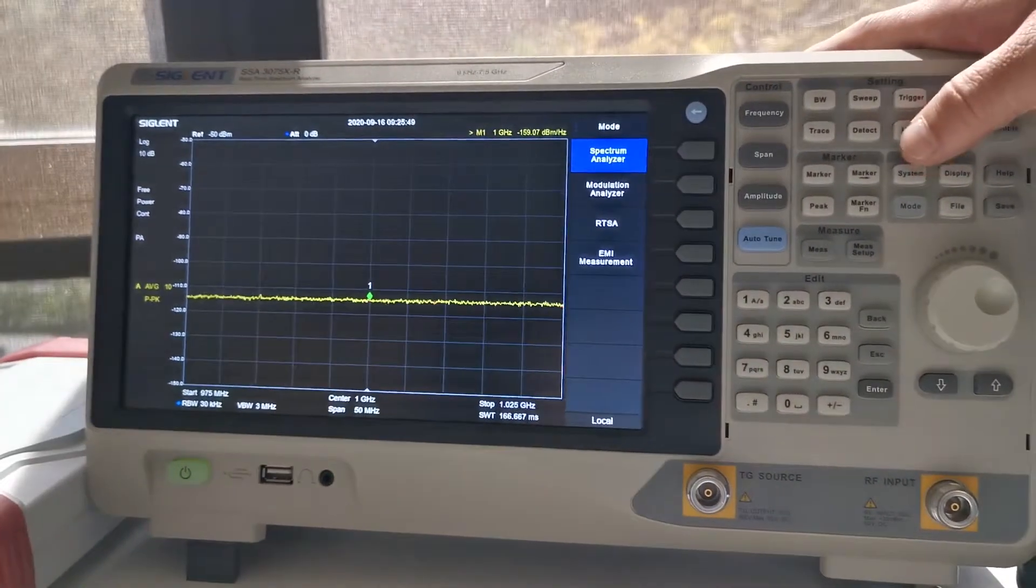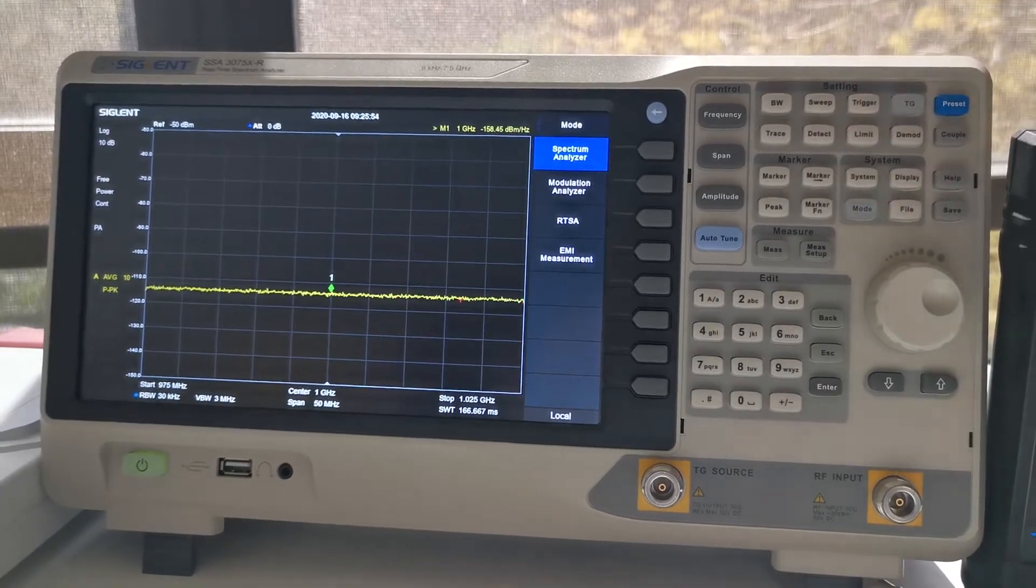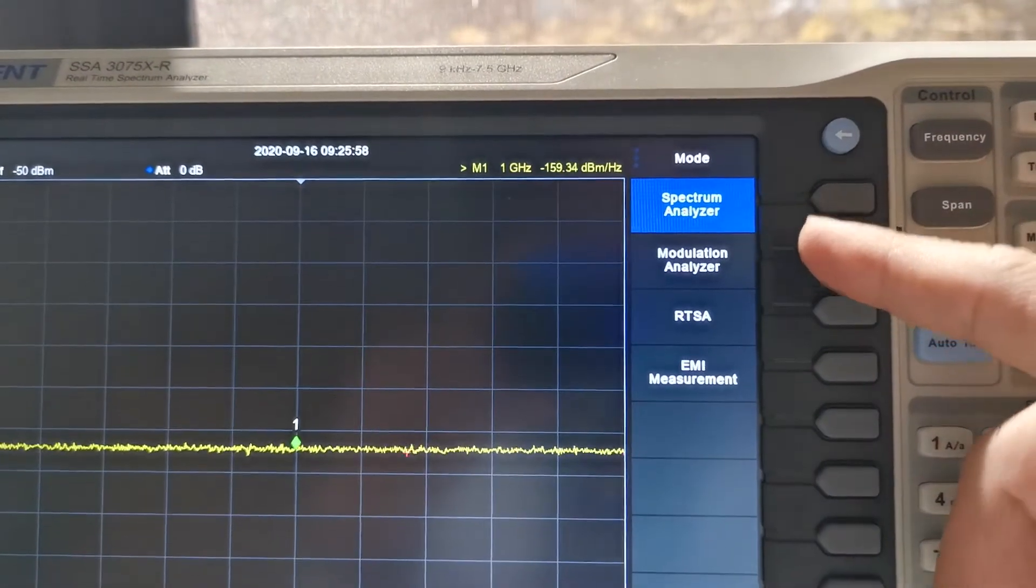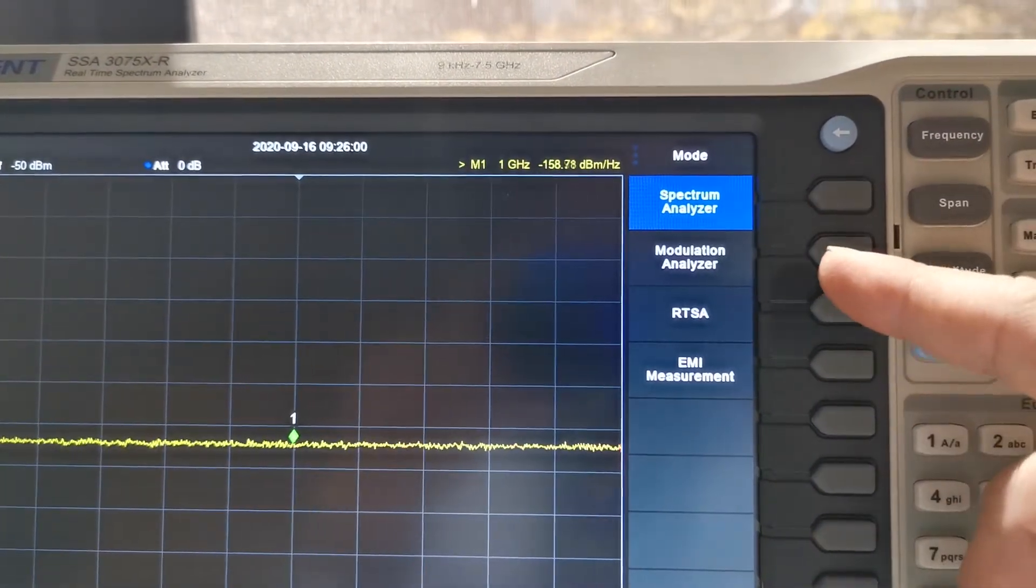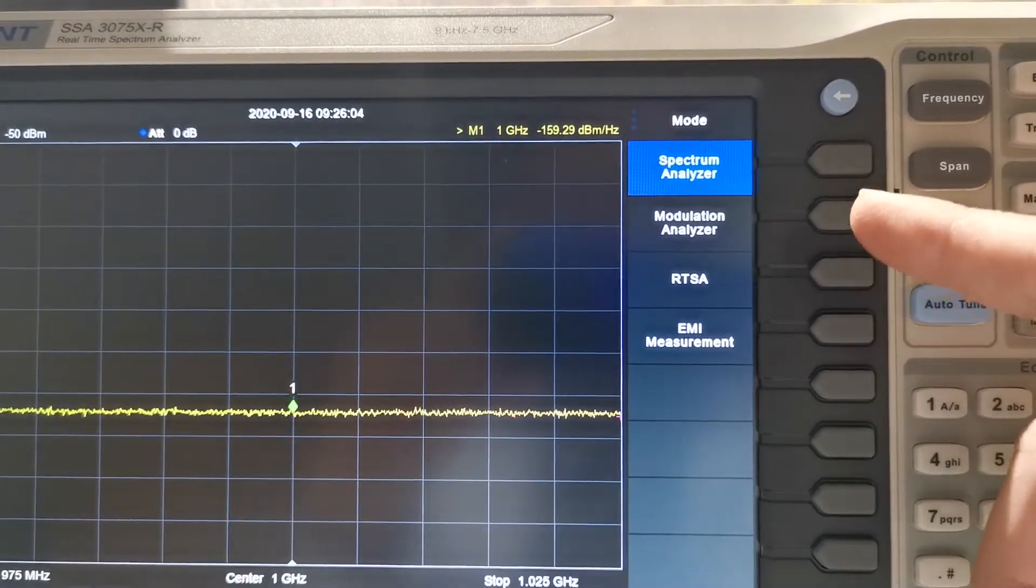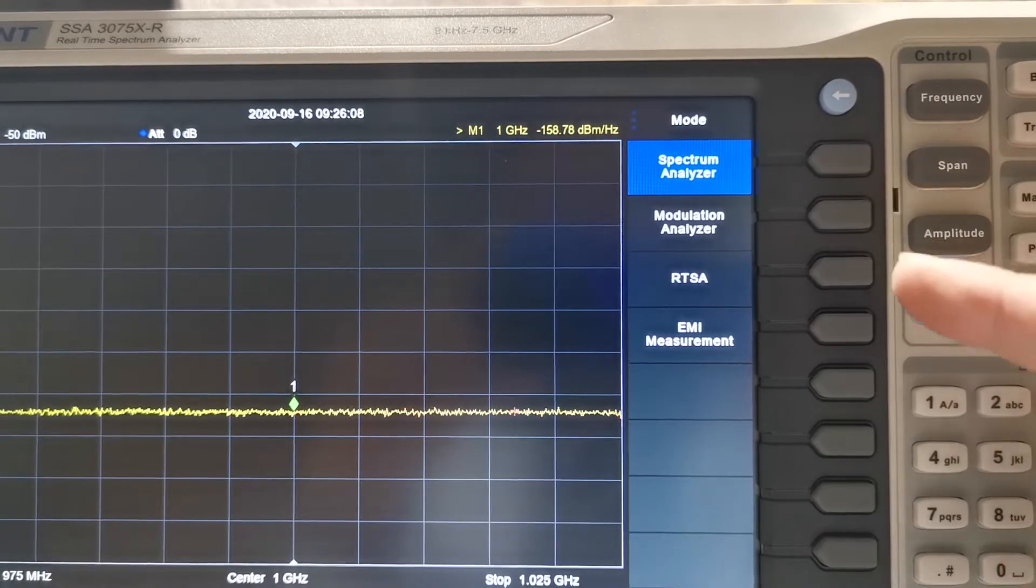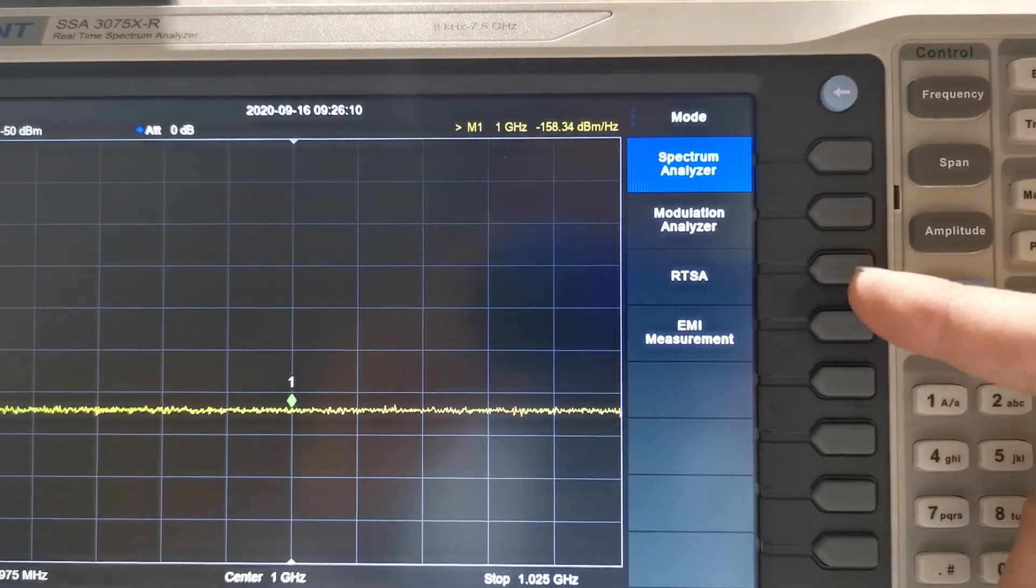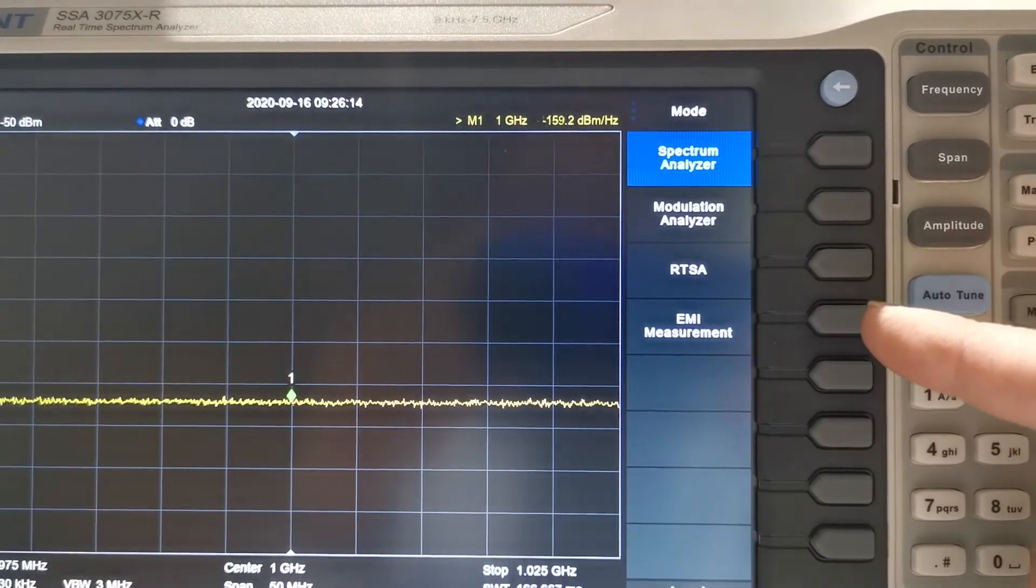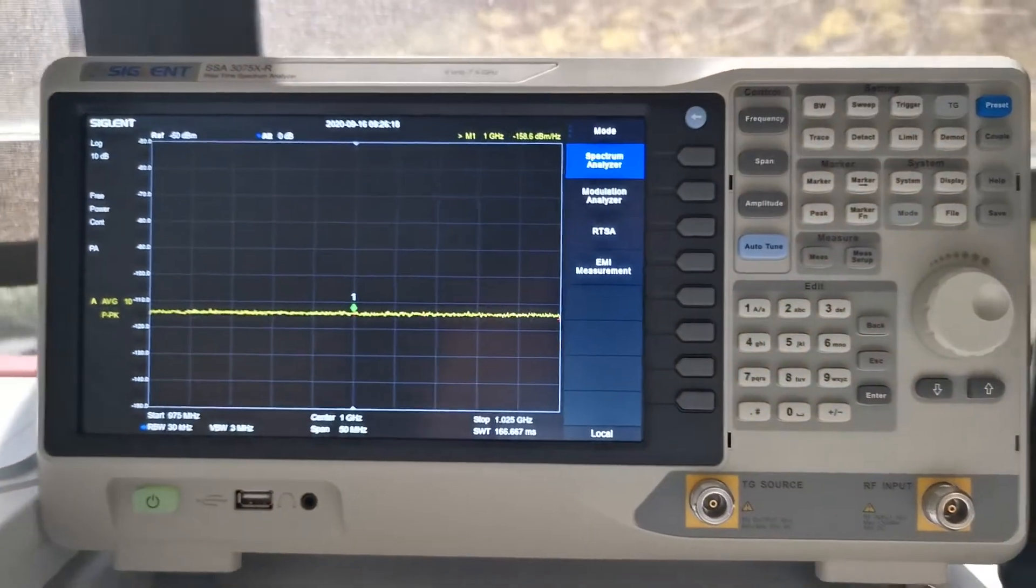I've already enabled all the functions so you can see all of them in the manual. We can do normal spectral analysis here. We can also do modulation analysis here. You can demodulate AM or FM signal or digital modulation like QPSK or QAM to see constellations and EVM. You can do real-time spectral analysis here, RTSA, which is today's topic. We can also do EMI testing. I may talk about EMI in a separate topic in the future.